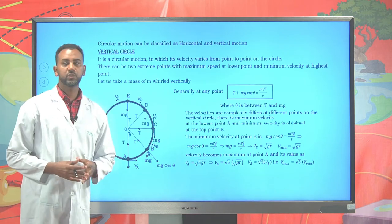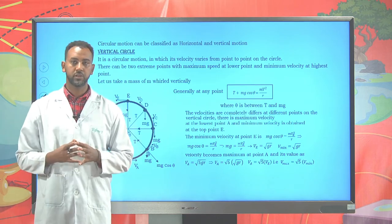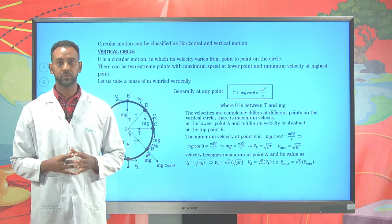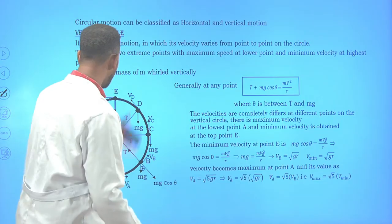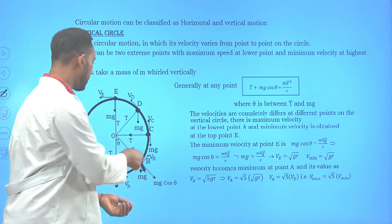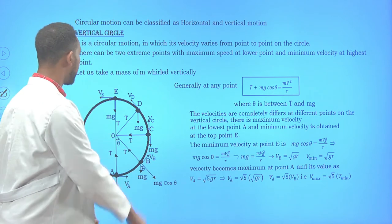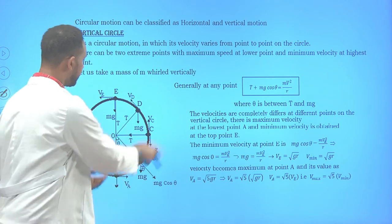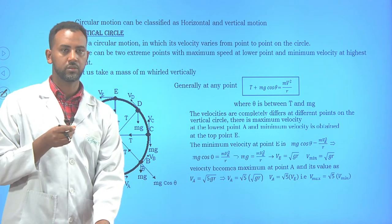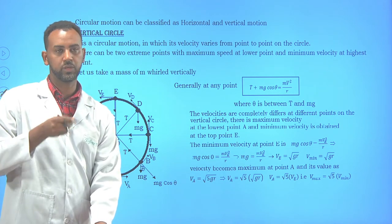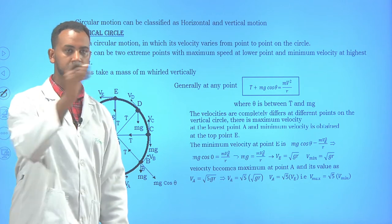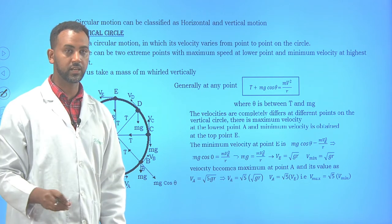It is possible to classify circular motion into two types: the vertical circle and the horizontal circle. Suppose here you have a particle and you just hold a particle and try to create a vertical circle. For example, take a stone on a thread. If you move it like this, you form a vertical circle.